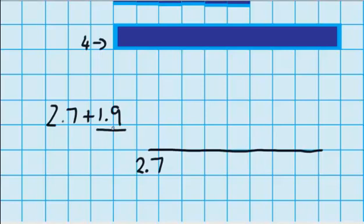Well, I can see that 1.9 is very close to 2. So I'm going to try jumping up by 2. Plus 2. Now 2.7 plus 2 equals 4.7.